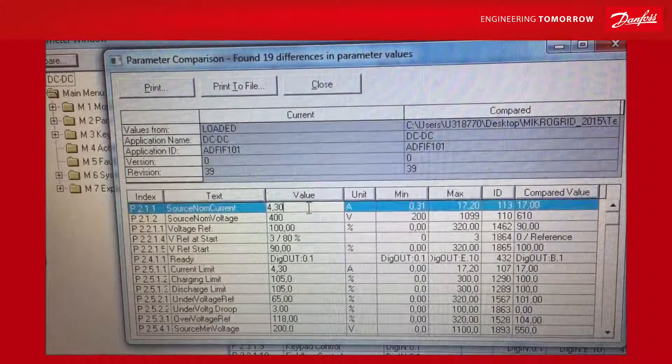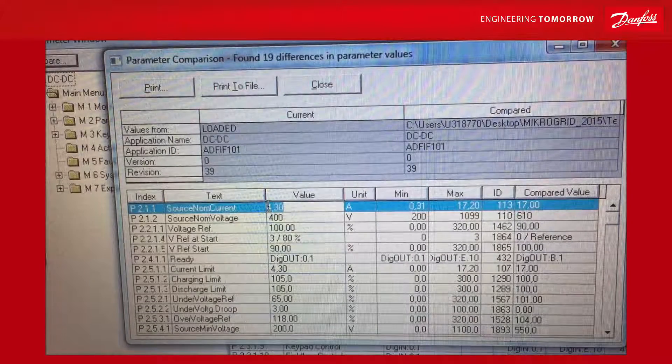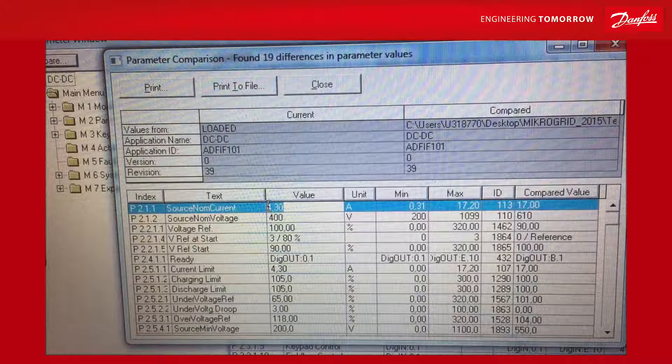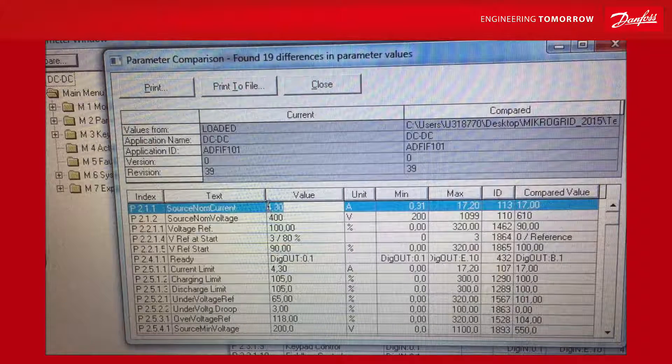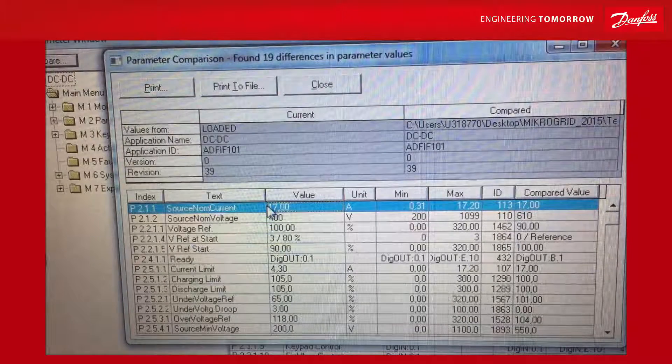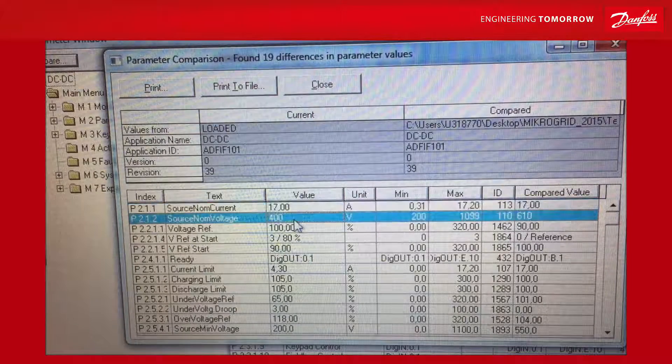The first parameter I change is the source nominal current. That is, source is the battery side. And I have quite bigger current capacity here. So I go the full maximum allowed for the DC link here.